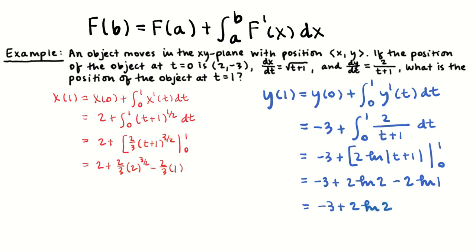I set it up, plugged in the given information, anti-differentiated, checked my antiderivative, plugged in 1, plugged in 0, and subtracted. It would be good to stop at the second-to-last line in blue if this were a free-response scenario. But you need to know that the log of 1 is 0 for multiple-choice situations.